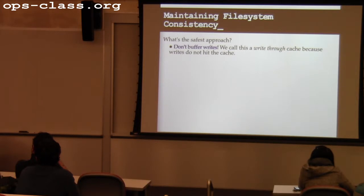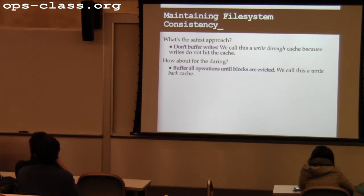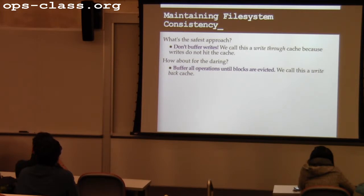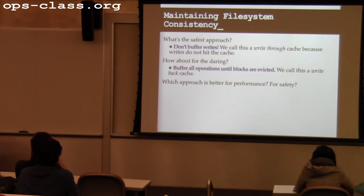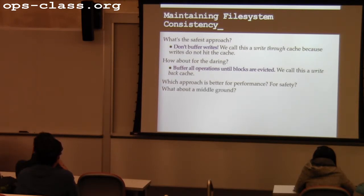The other approach is to buffer all write operations in the cache for as long as possible — until either the block is evicted to make room for something else I want to cache, or when the system is shut down or the file system is unmounted. In this approach there's a one-to-one mapping between writes and disk operations with write-through, but with write-back we allow that ratio to go up, absorbing as many writes as possible into the cache, reducing disk traffic but causing more problems on failures.